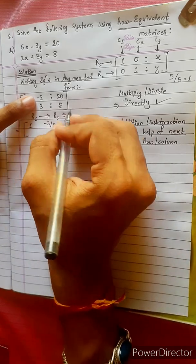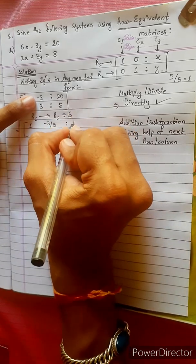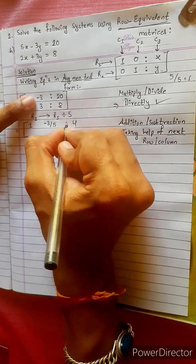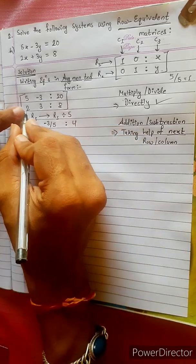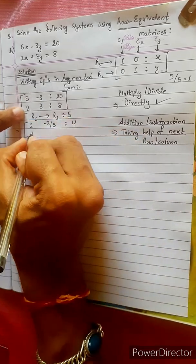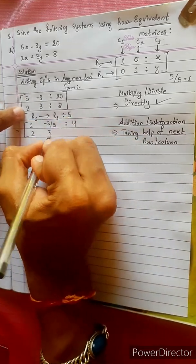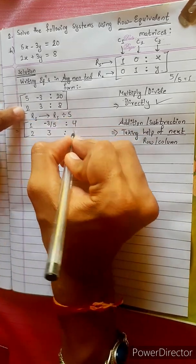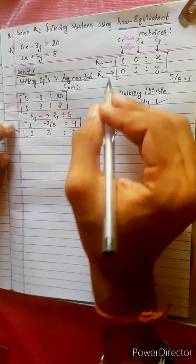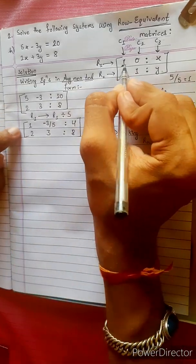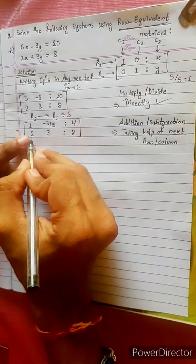20 divided by 5 gives 4. So the new R1 row is: 1, minus 3 by 5, 4. This is the result of the first row operation.